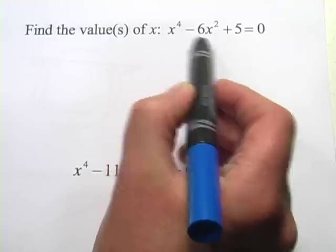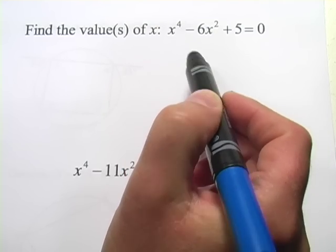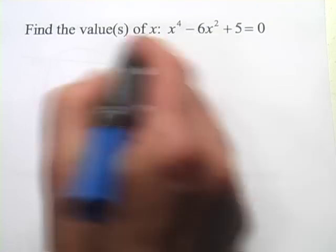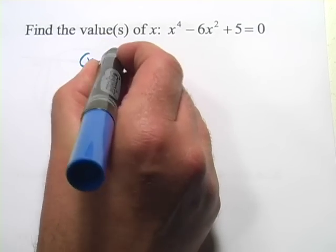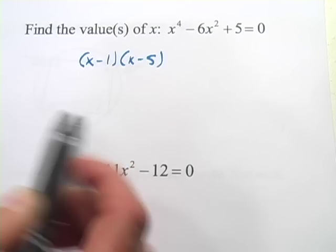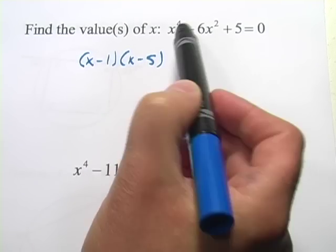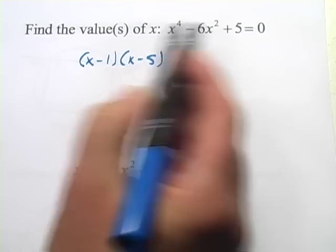Now, if this one said x squared and this one said x, factoring it probably wouldn't be too big of a problem. You can see you've got a positive 5 here and a negative 6, so if we said x minus 1 times x minus 5, that would add up to negative 6. It would multiply out to a positive 5, but since this is a fourth-degree equation,